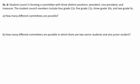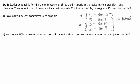In the last example, student council is forming a committee with three distinct positions: president, vice president, and treasurer. The student council members include four grade 12s, five grade 11s, three grade 10s, and two grade 9s. How many different committees are possible? We have nine seniors — four grade 12s and five grade 11s — and five junior council members — three grade 10s and two grade 9s — so there are 14 total students.